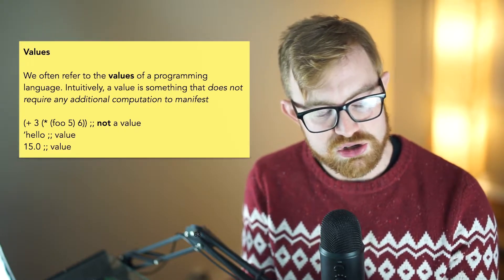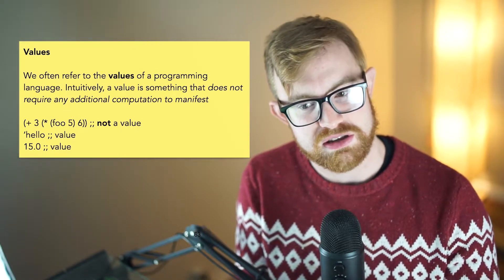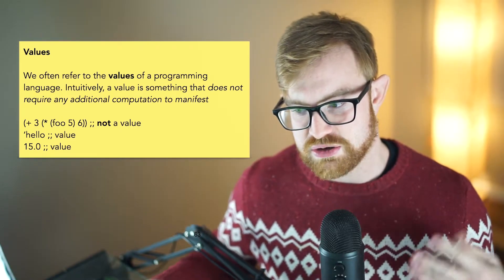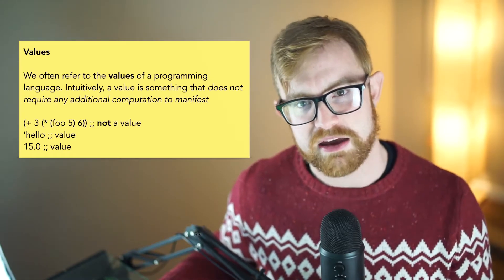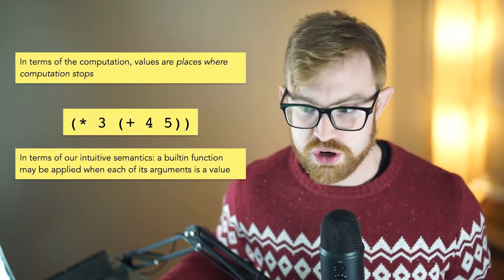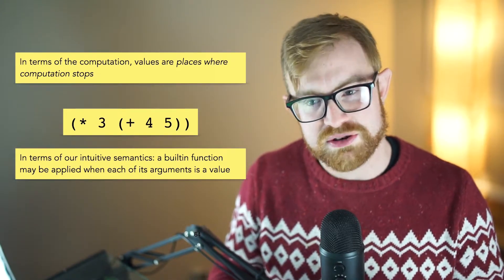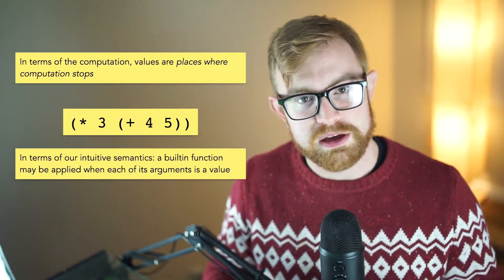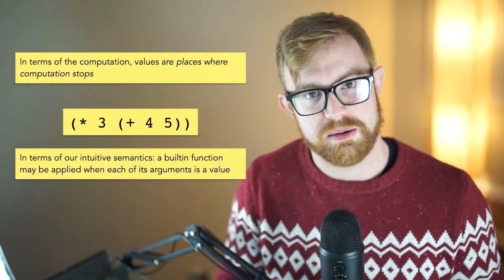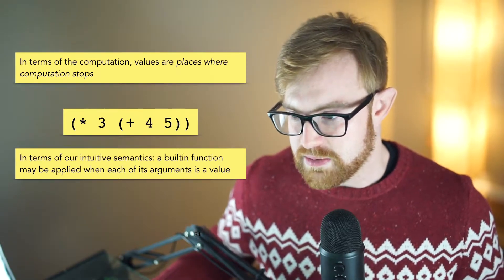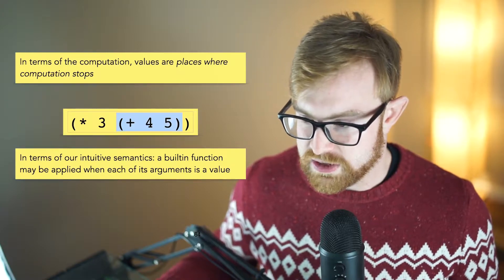But if you wanted to materialize 2 plus 5, well, you would actually have to do some computation to then get that result of 7. Things that are values are things that don't require any more computation to make manifest. In terms of the actual computation, values are the places where computation stops. You're doing a bunch of computation on some sub-expression, maybe this whole sub-expression, and then you have to go compute this 4 plus 5.